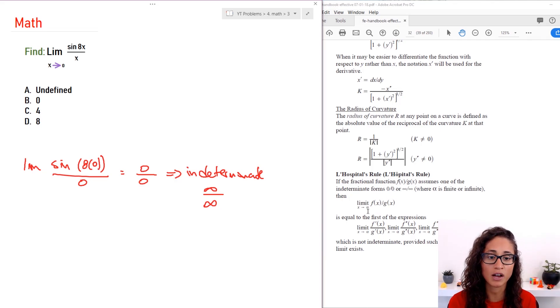So L'Hôpital's rule tells us when you have the limit x going to alpha of f of x over g of x, you have to take the derivative of f of x over the derivative of g of x.